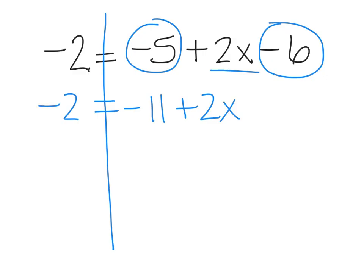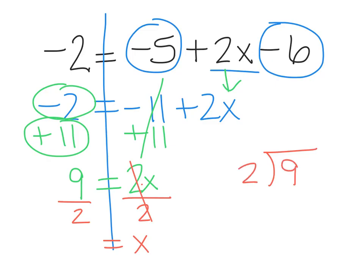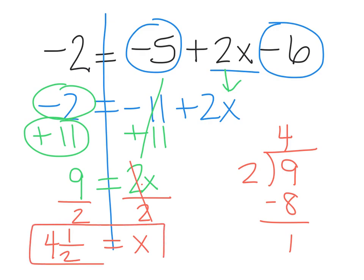Now it's a two-step equation, so I'm going to solve for x and get rid of what's furthest from x first. So I'm going to add 11 to both sides. Since these signs are different, I subtract and get positive 9. These cancel and I have 2x. Finally, I'm going to divide both sides by 2 to undo this multiplication. Setting up long division: 2 fits into 9 four times — 4 times 2 is 8. Subtract and I have a remainder of 1 out of 2. So x equals 4 and a half.